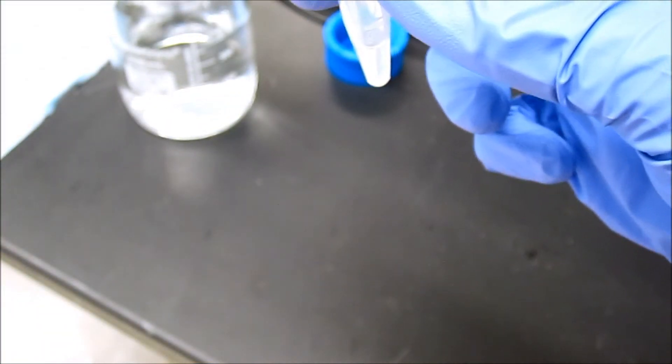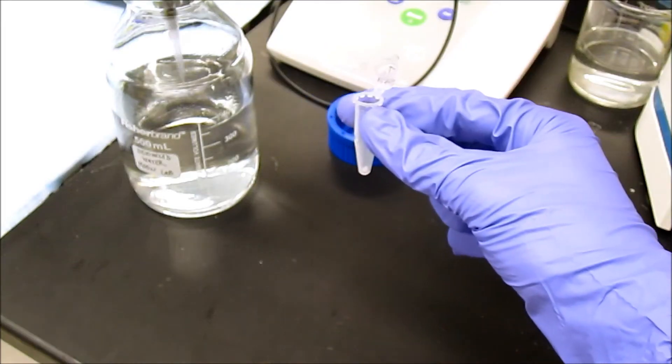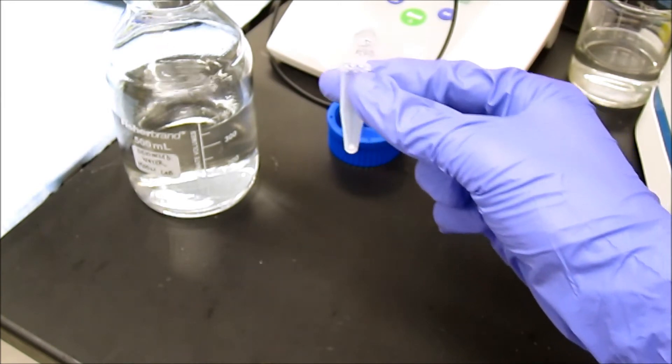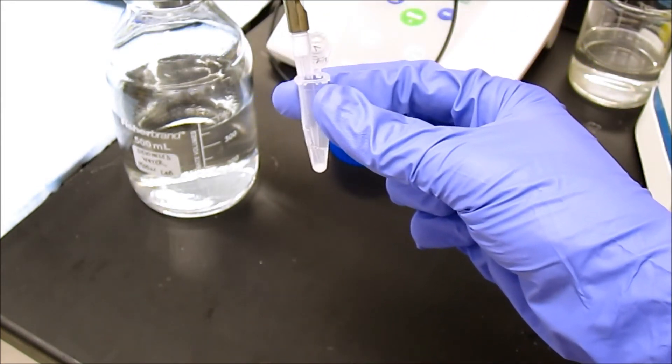After the initial centrifugation, the remaining solution called a supernatant needs to be removed from the pellet. The pellet is then re-suspended in 200 microliters of deionized water. The solution should again appear cloudy.